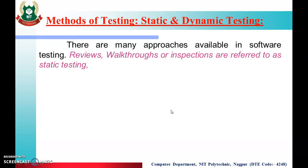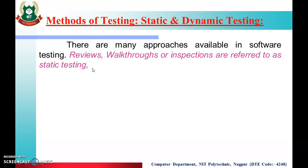Today we will see methods of testing. There are many approaches available in software testing. Reviews, walkthrough, or inspection are referred to as static testing. If I talk about methods of testing, there are two methods: the first one is static and the second one is dynamic.